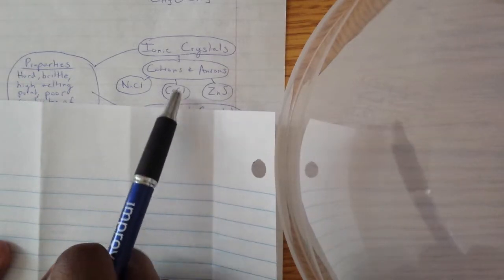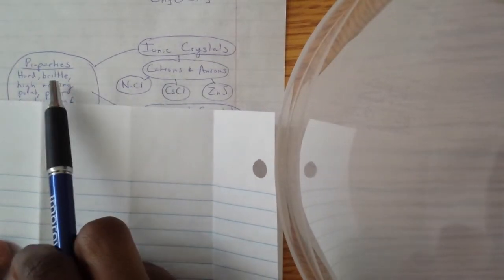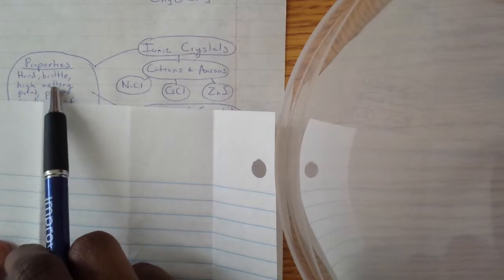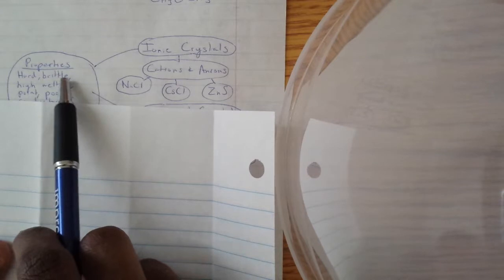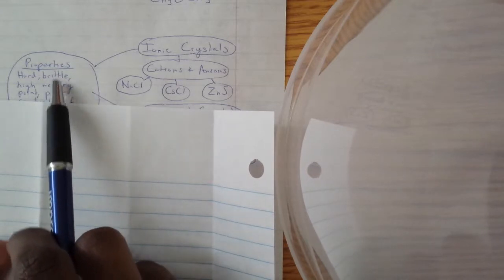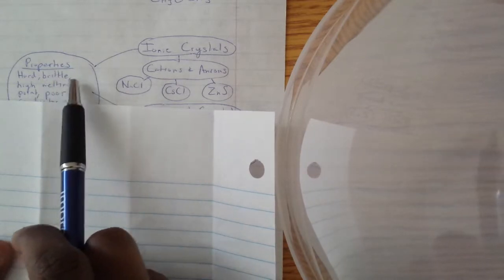Because ionic bonds are really strong, the properties resemble that. It's hard because of strong bonds, and then brittle because since it's strong, it's not really flexible.